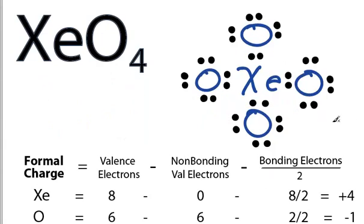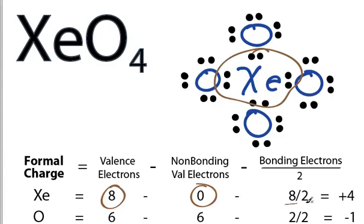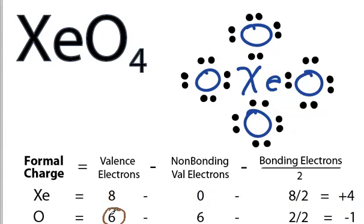Looking at the formal structures, xenon has 8 valence electrons when you look on the periodic table. All of them are involved in bonds, so there's no non-bonding. And these right here, these 8, are our bonding. So we take 8 and divide it by 2. 8 minus 0 minus 4 is plus 4. For the oxygens, and all the oxygens are the same, we have 6 from the periodic table. We have 6 non-bonding valence electrons. And then we have these 2 bonding valence electrons right there, which we'll divide by 2. 6 minus 6 minus 1 gives you negative 1.